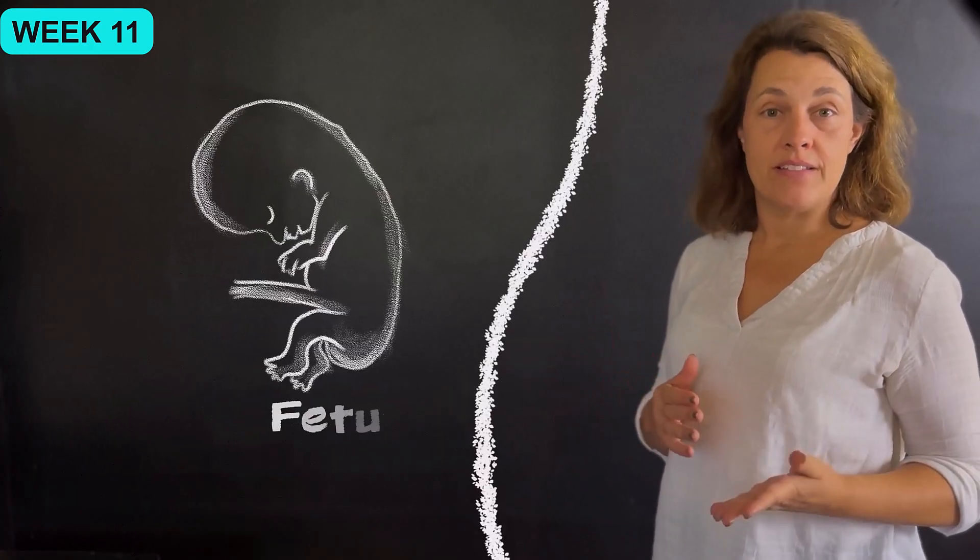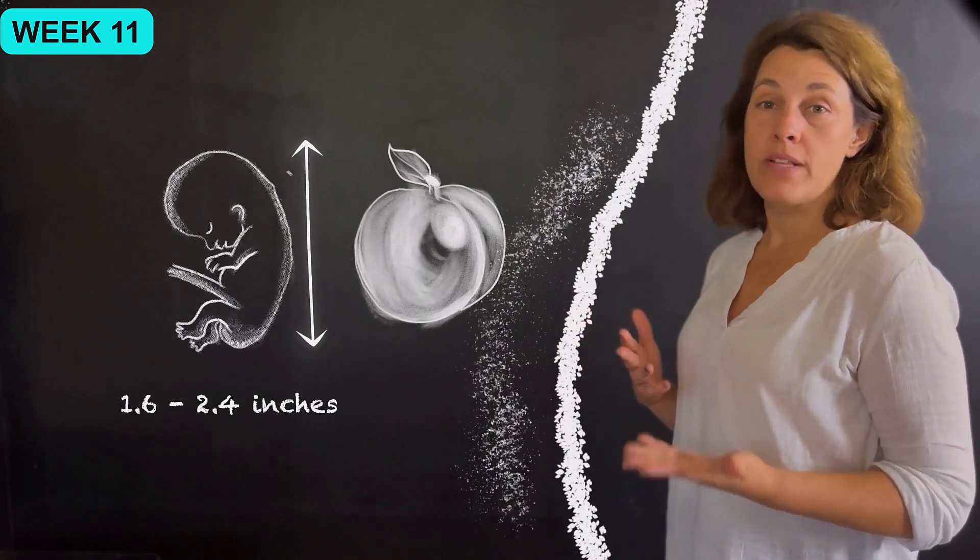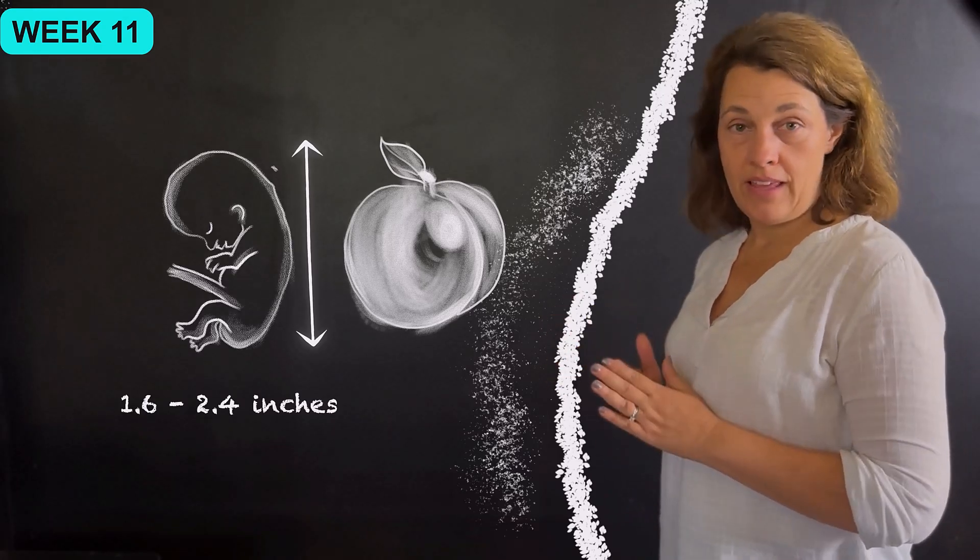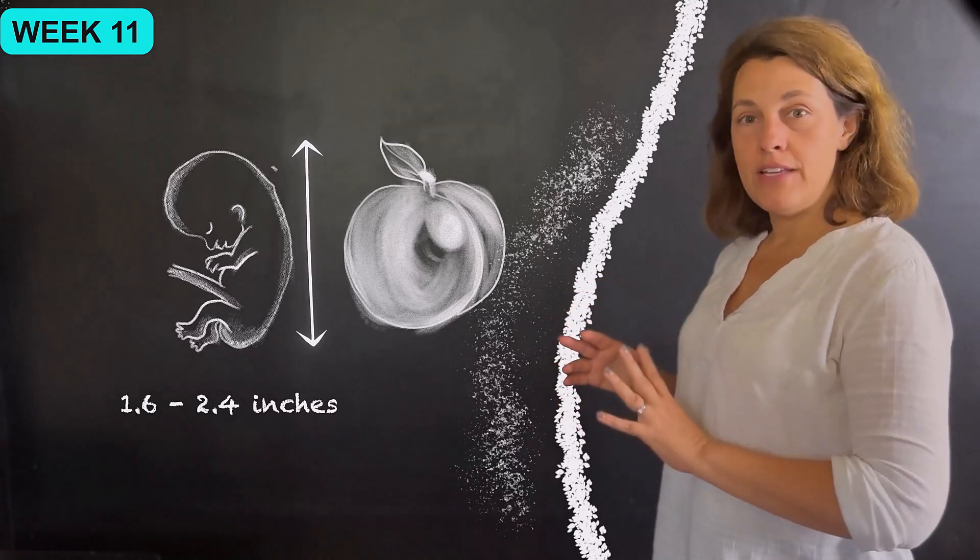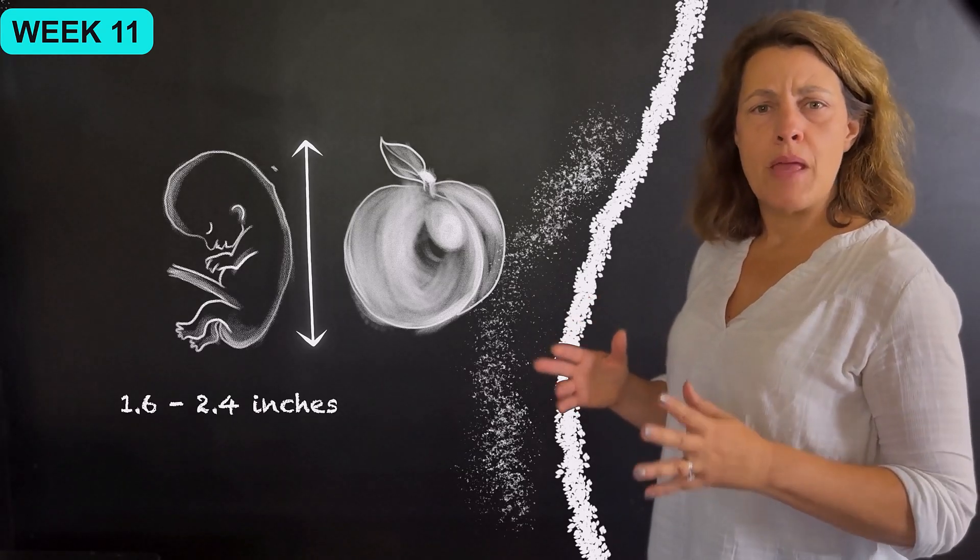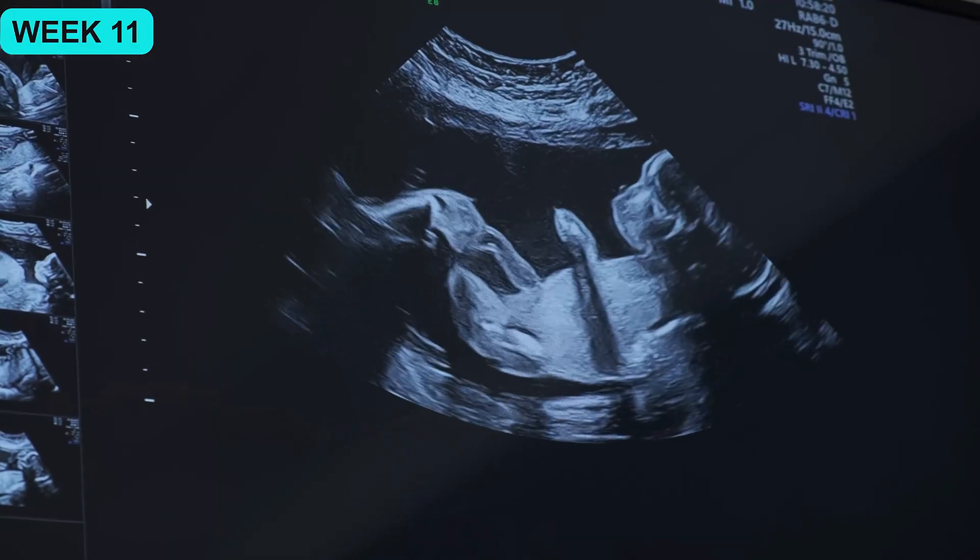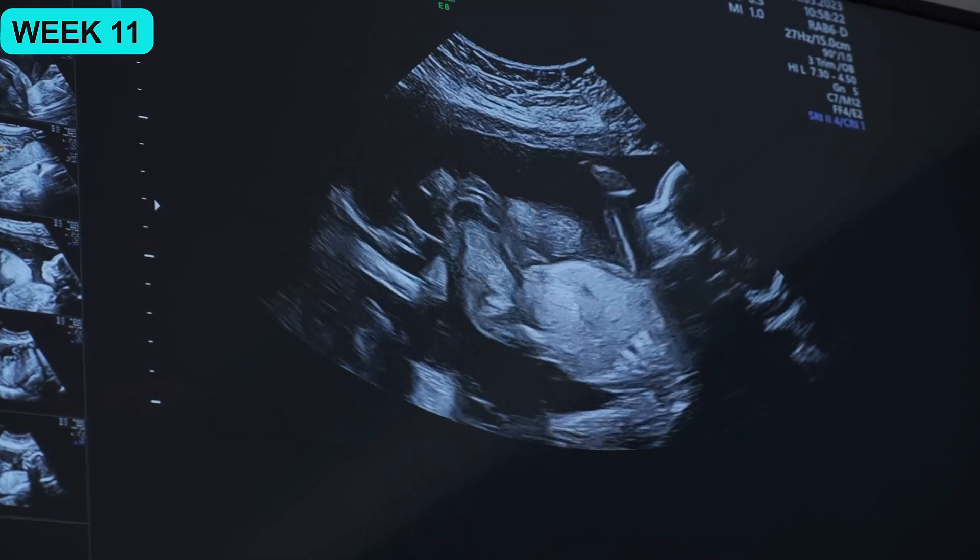The baby, which is called a fetus at this point, is about the size of a plum, measuring approximately 1.6 to 2.4 inches in length. Organs are continuing to develop and mature this week. You probably can't feel any of the baby's movements, but they are happening this week. The fetus is starting to stretch and flex and kick inside the uterus.